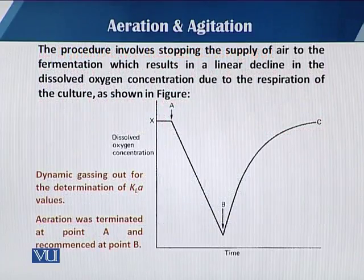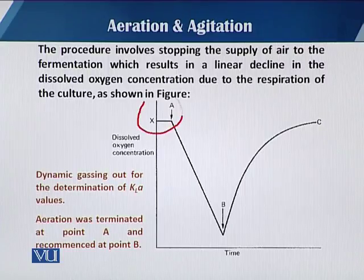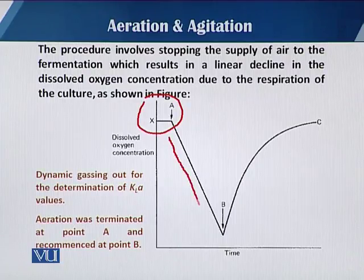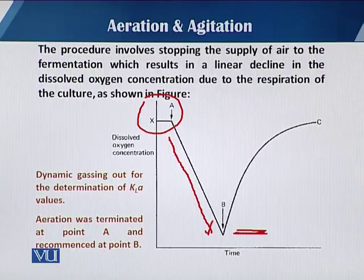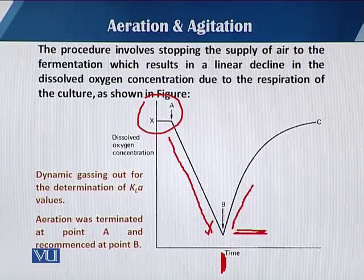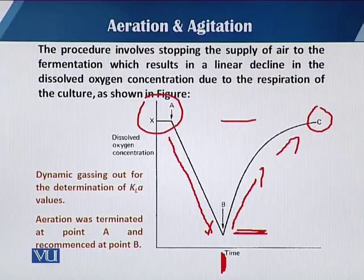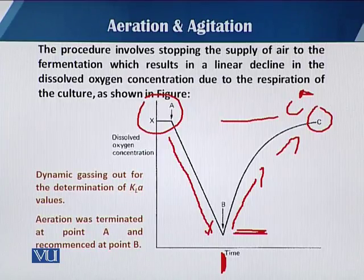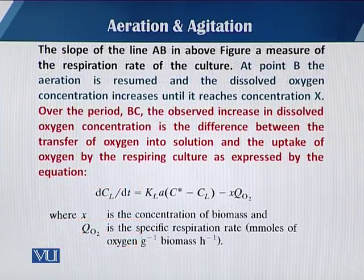You can see this in the diagram. At the start of fermentation, when there is no aeration, there is a gradual depletion of oxygen down to a certain point, at which we start aeration. When aeration begins, there is a gradual increase in dissolved oxygen up to a certain point called C-star, which is the saturation point. This trend can be used for the dynamic gassing out method and is helpful in calculating KLA.